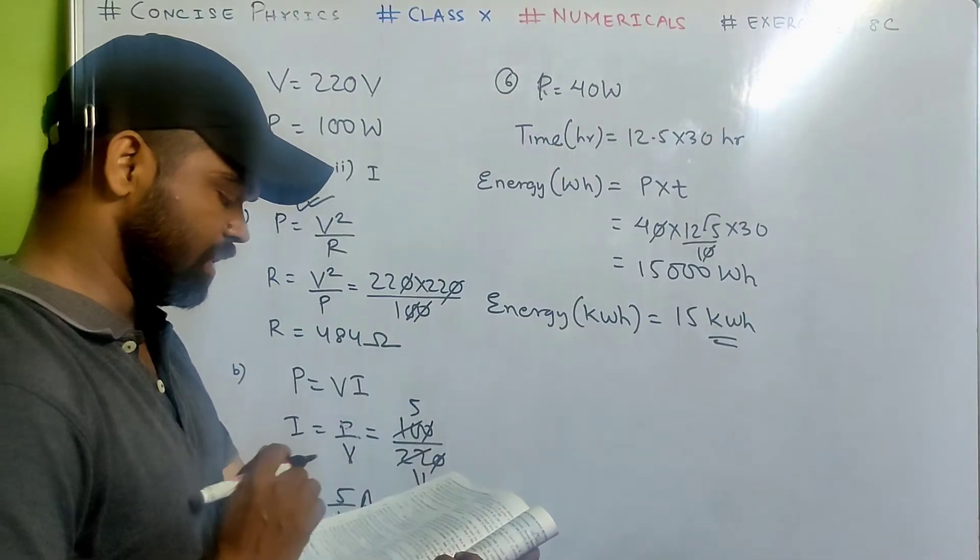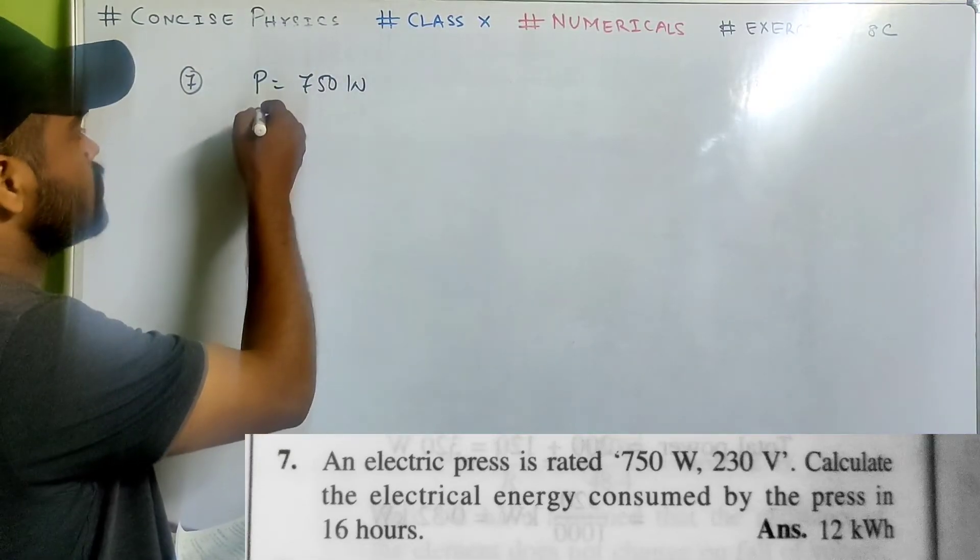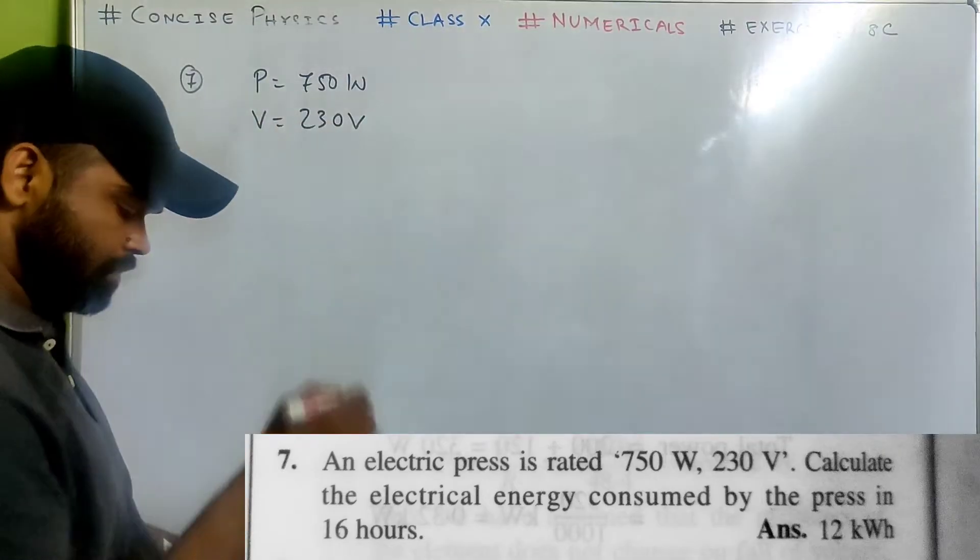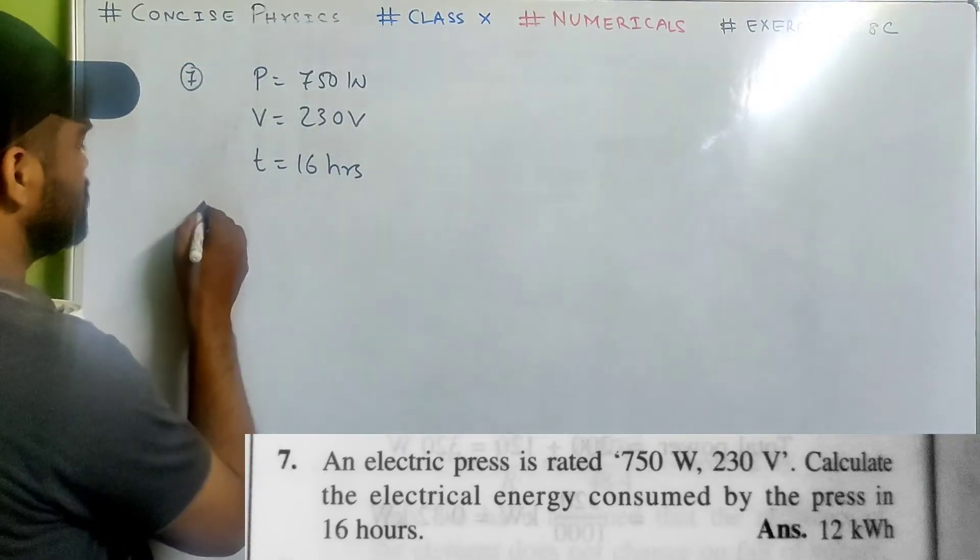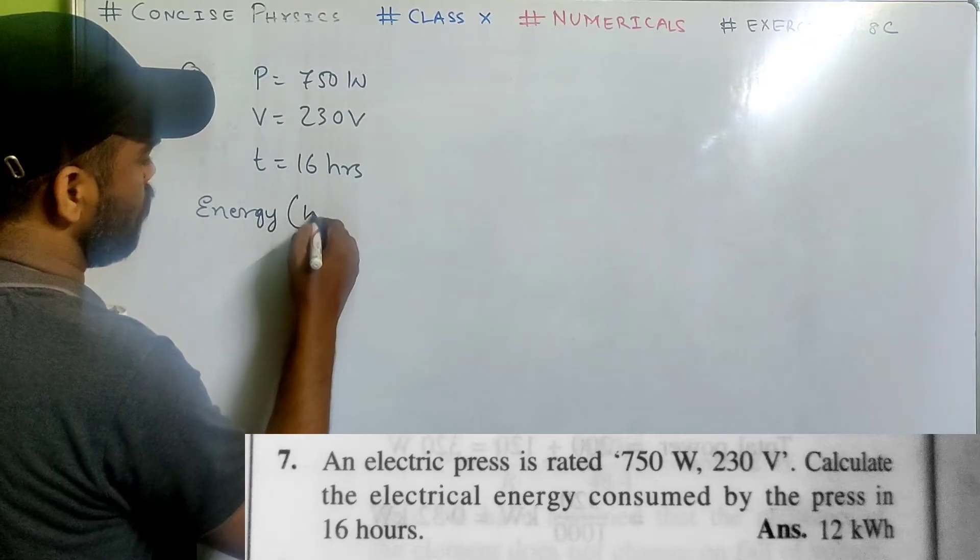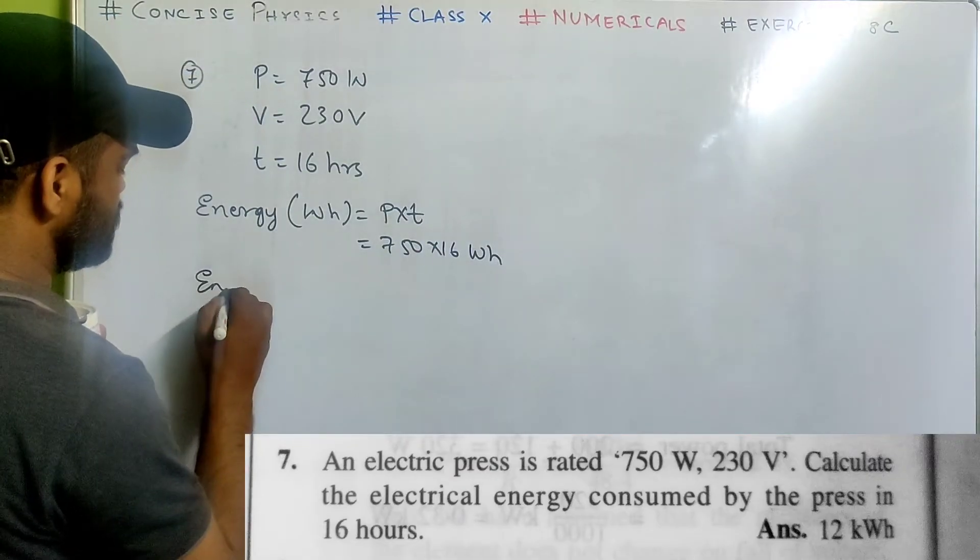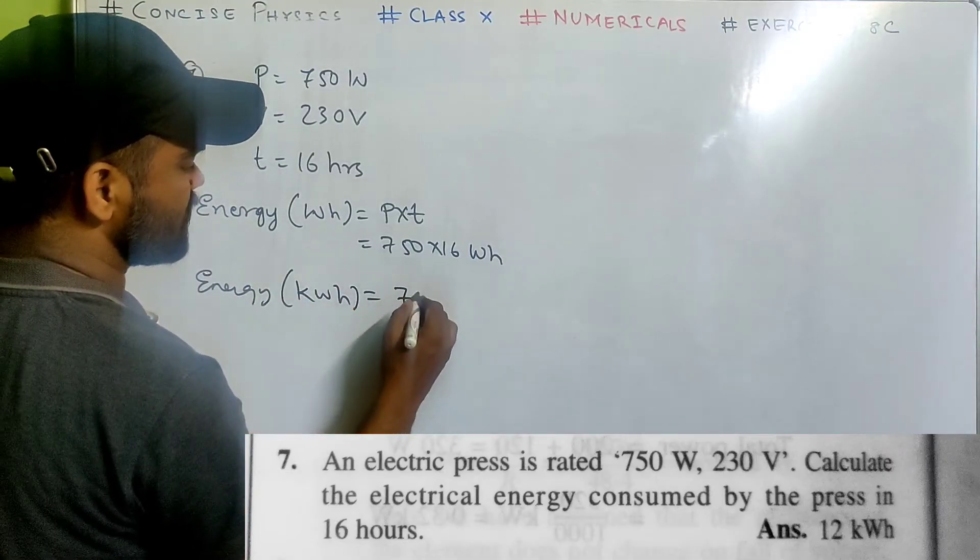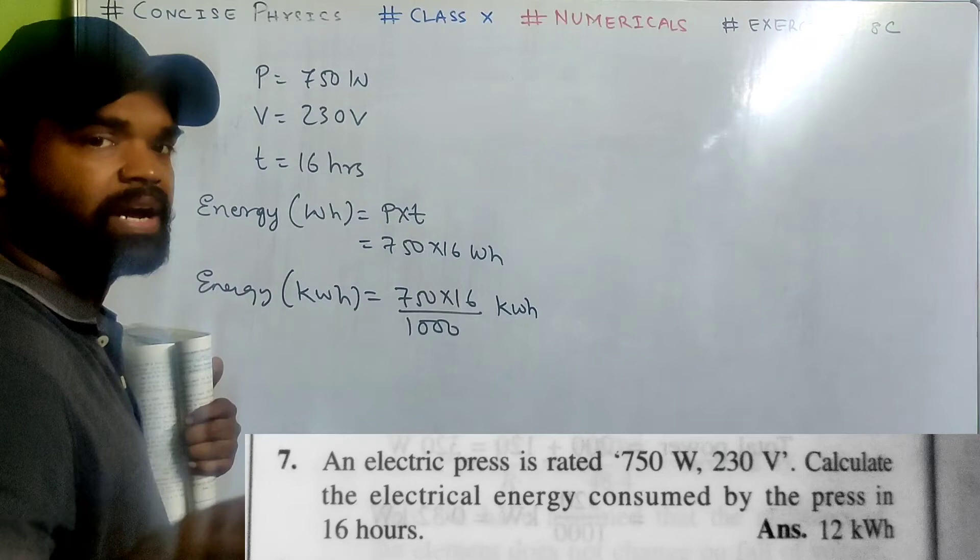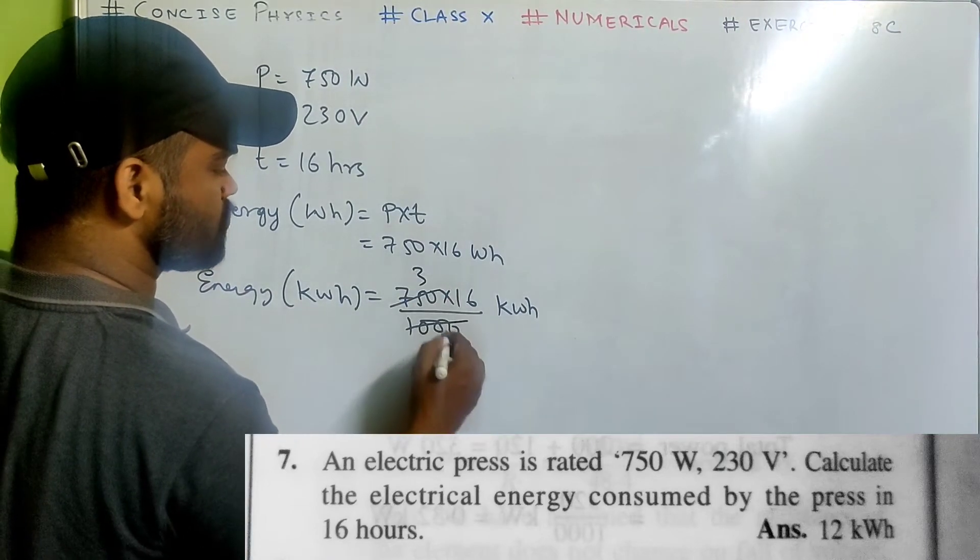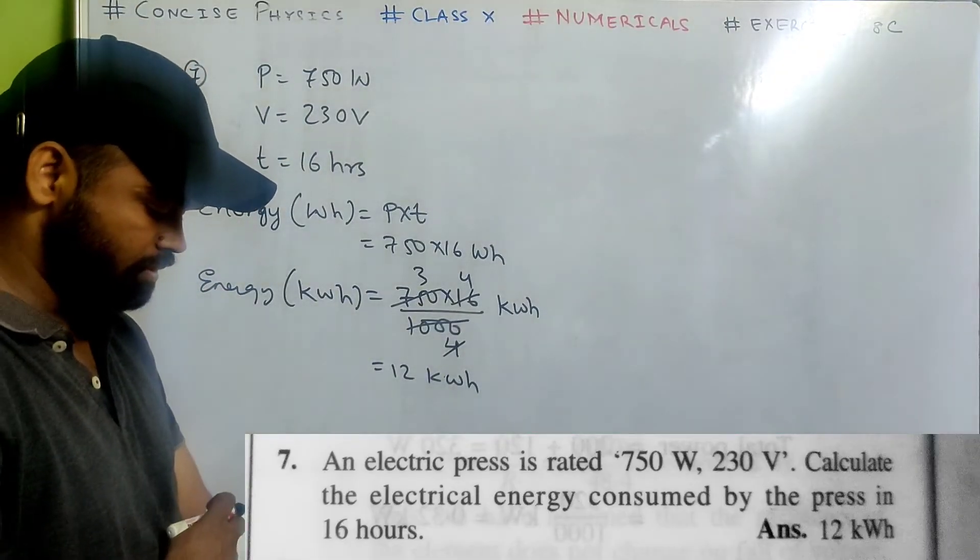We look at number 7 now. An electric press is rated 750 watt 230 volt. Calculate the electrical energy consumed by the press in 16 hours. Just now we did energy consumed. Energy consumed in watt hour is power into time. That is 750 into 16 watt hour. So energy in kilowatt hour will be 750 into 16 by 1000. From watt hour to kilowatt hour, we divide by 1000. That's 12 kilowatt hour. That's my answer.